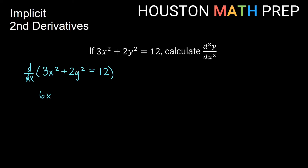The derivative of the second term, we get a power rule again. So the power comes out, multiplies the front, we get 4y. But remember when we take the derivative of something involving y, the chain rule gives us the derivative of y with respect to x. So a little bit different rule when we have y terms than x terms. Over here on the right, the derivative of 12 is going to be 0 because 12 is a constant.